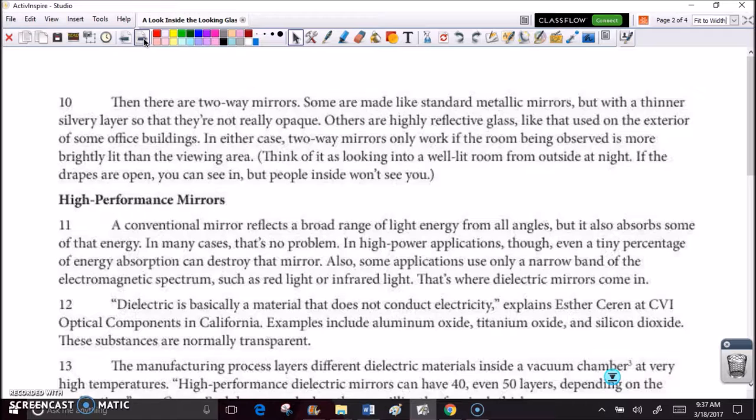Then there are two-way mirrors. Some are made like standard metallic mirrors, but with a thinner silvery layer so that they're not really opaque. Others are highly reflective glass, like that used on the exterior of some office buildings. In either case, two-way mirrors only work if the room being observed is more brightly lit than the viewing area. Think of it as looking into a well-lit room from outside at night. If the drapes are open, you can see in, but people inside won't see you.